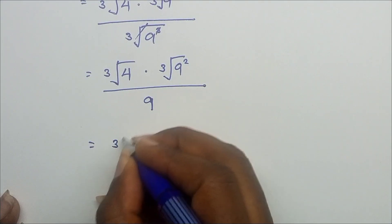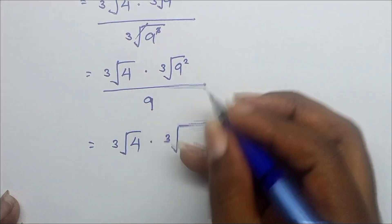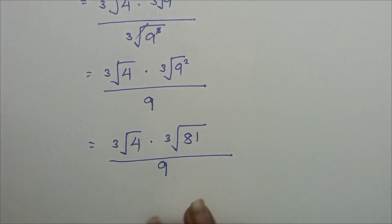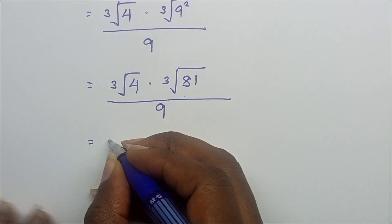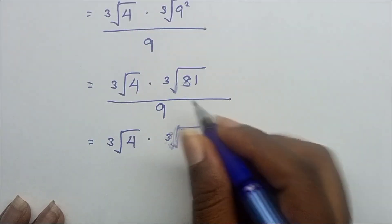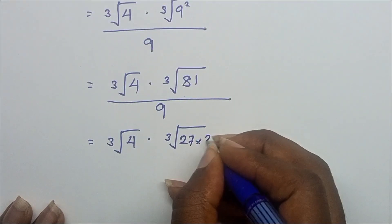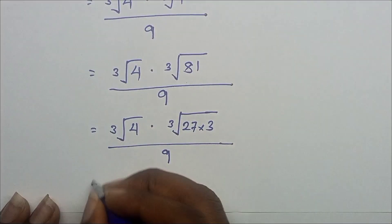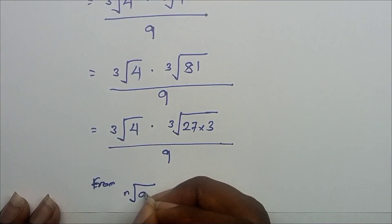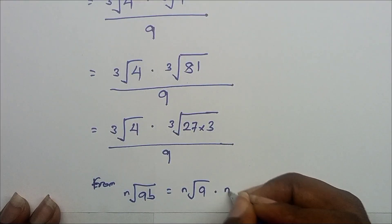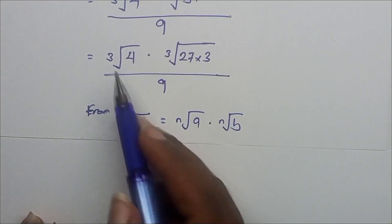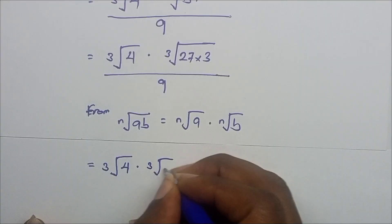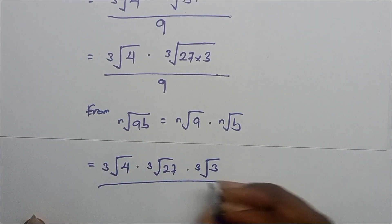This equals cube root of 4 times cube root of 81 over 9. Now 81 can be split into 27 times 3, so we have cube root of 4 times cube root of 27 times cube root of 3 over 9, since nth root of ab equals nth root of a times nth root of b.